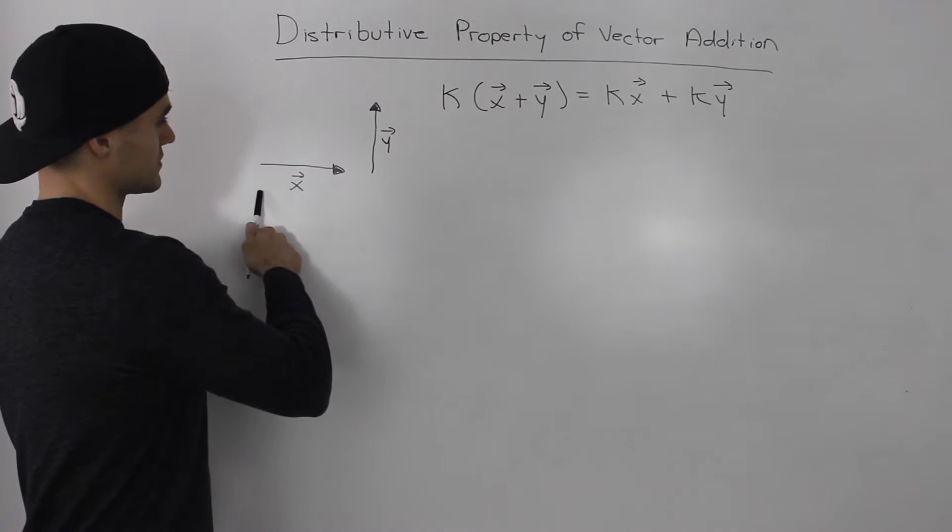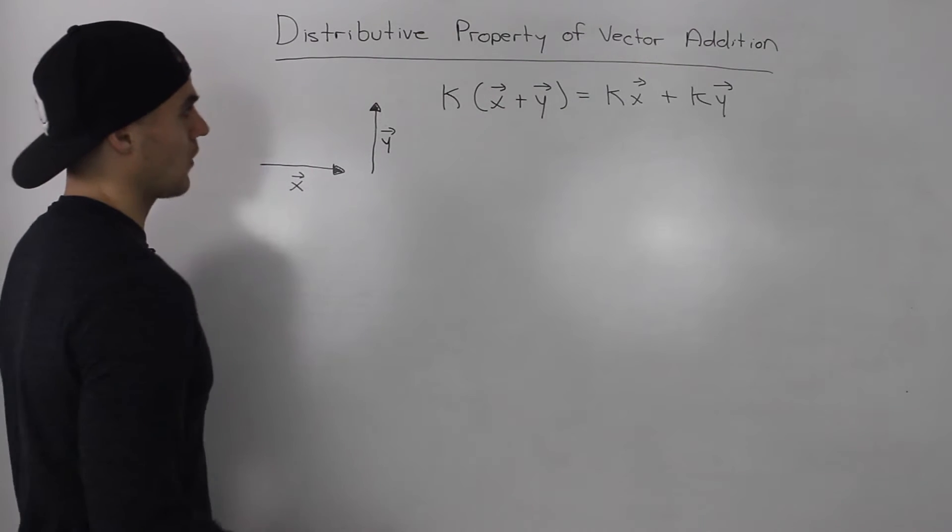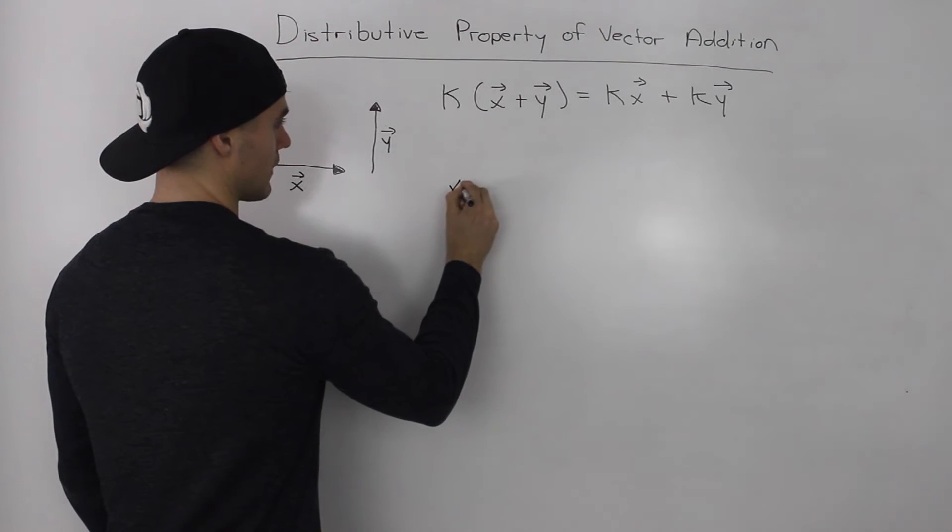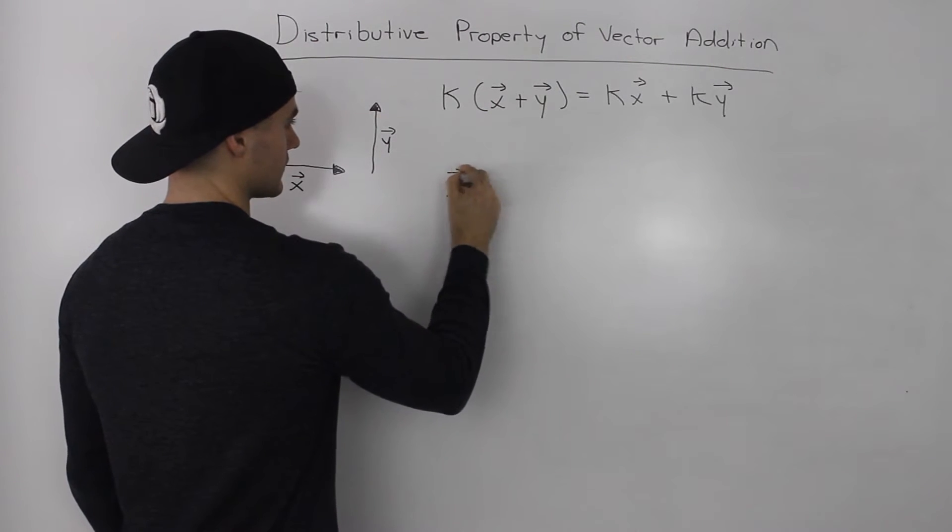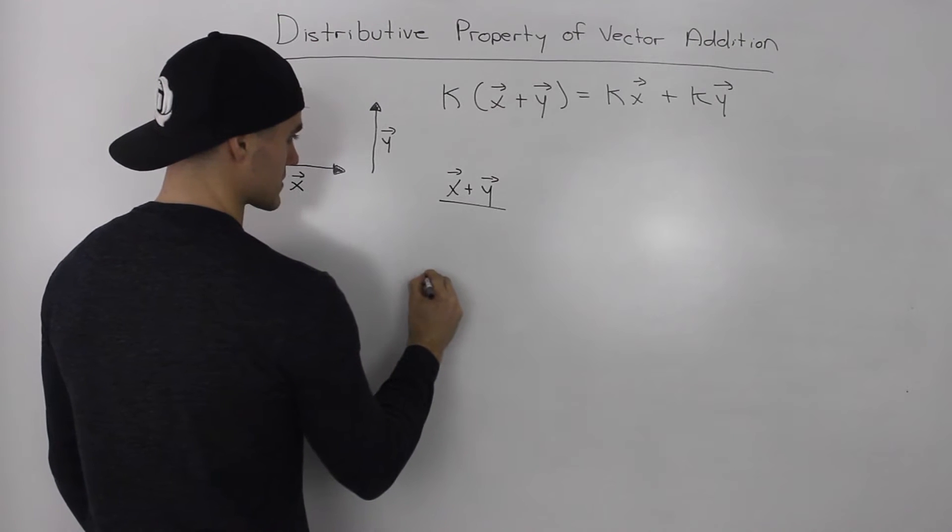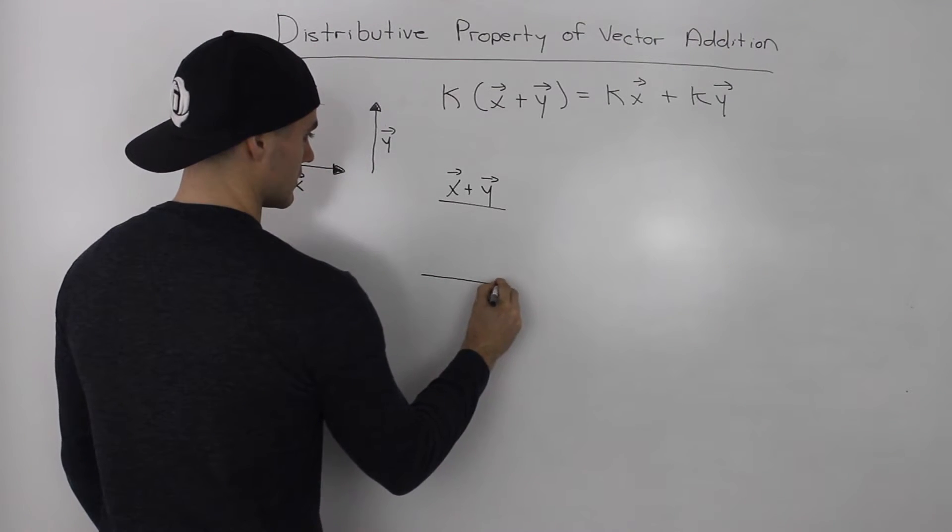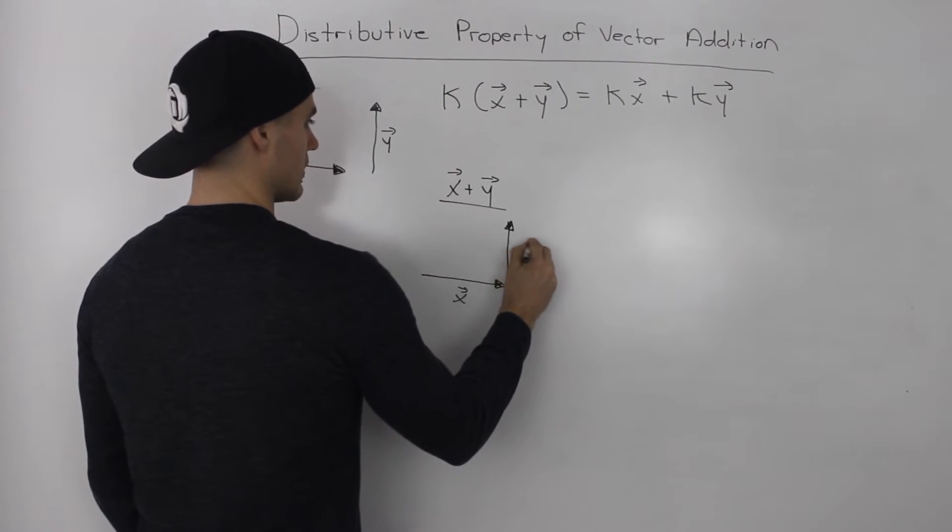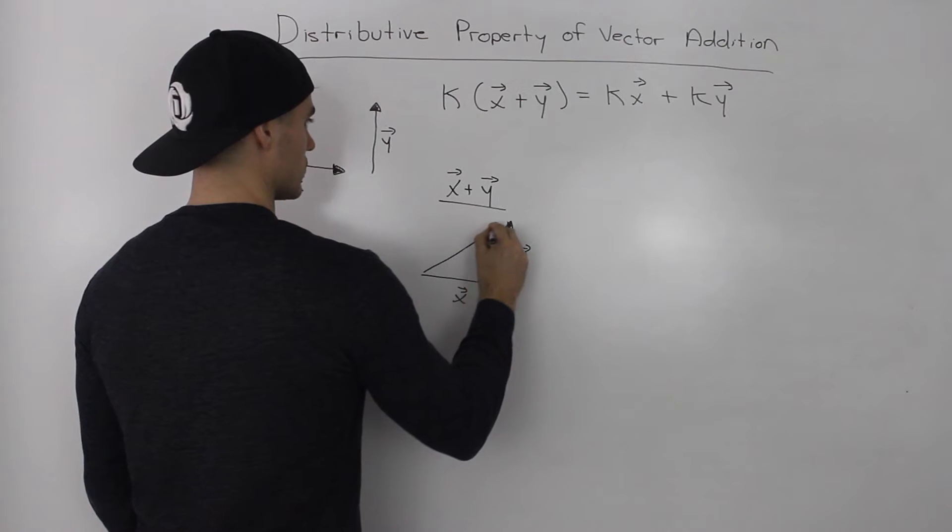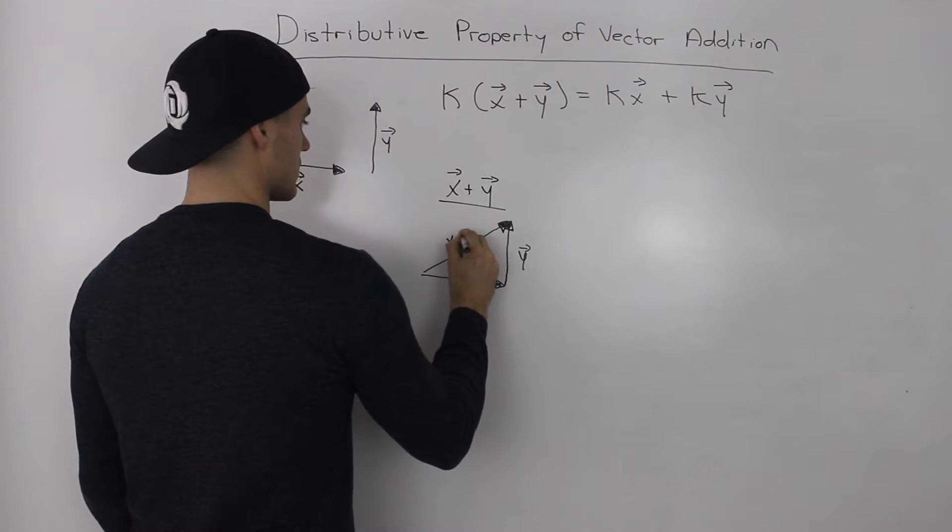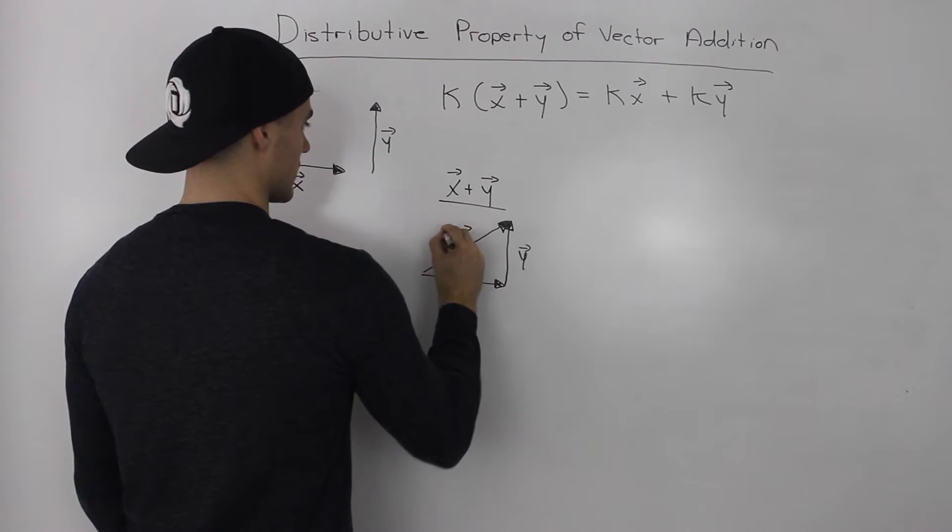So let's say I got these two vectors, this vector x and this vector y. The first thing I'm going to do is find what the resultant of x plus y is. So vector x plus vector y, and the resultant between them would be this vector right here. This would be the resultant x plus y.